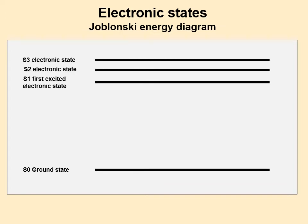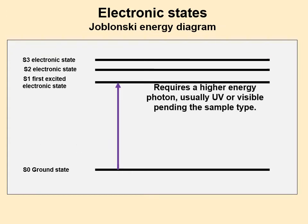To excite this molecule into an excited state, we're going to use a photon — in this case an ultraviolet photon. It has enough energy to do it and will bring that electron cloud into an excited state. This looks a lot like an atomic energy diagram, the energy diagram for electrons in an atom.